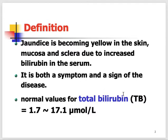Jaundice is both a sign and a symptom because patients can notice it and doctors can notice it. But one very important thing — even the patients or the doctors can miss it when you are not examining a jaundice patient in sunlight, because in indoor lighting we sometimes cannot catch the yellowish discoloration of the eyes or skin.